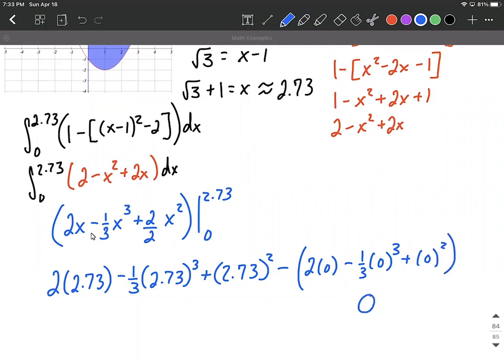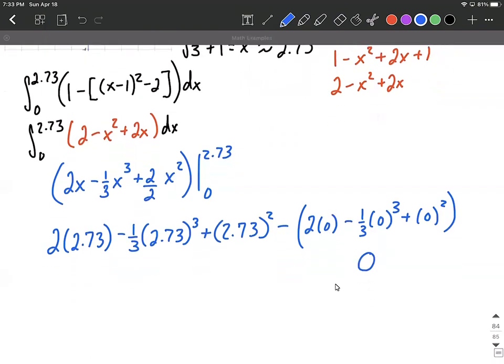The bottom value is 0, so we have 2 times 0 minus 1/3 (0)³ plus (0)². All the rest at the end here, everything in that last set of parentheses all has multiples of 0, so all that becomes 0. Then we'll put the first part here into our calculators to get an approximation. I got it to be about 6.13.